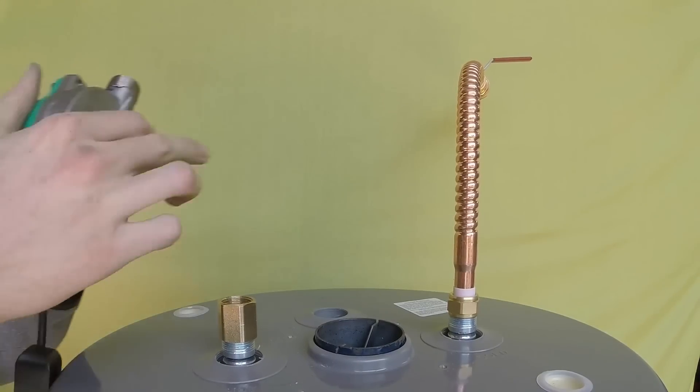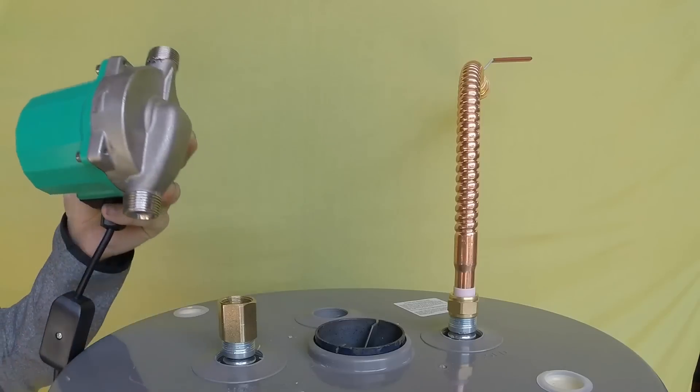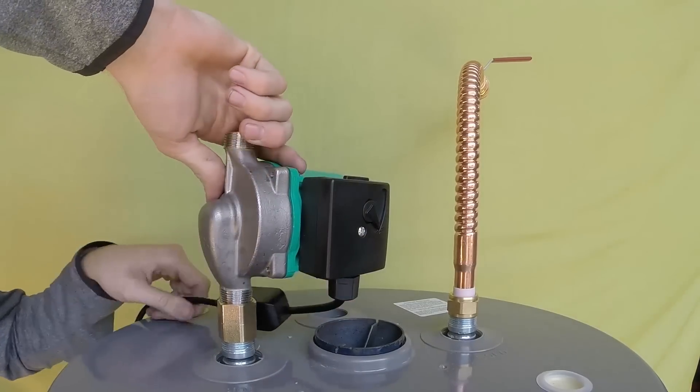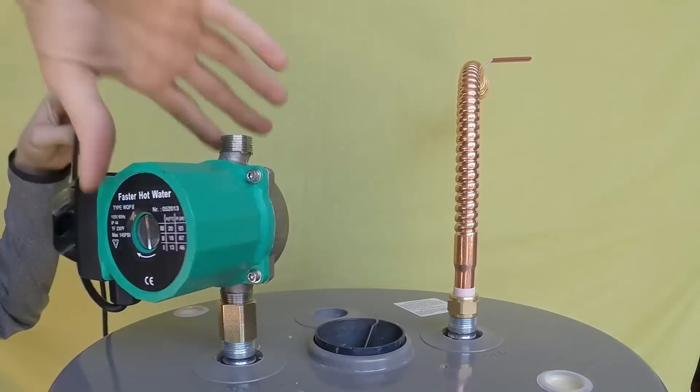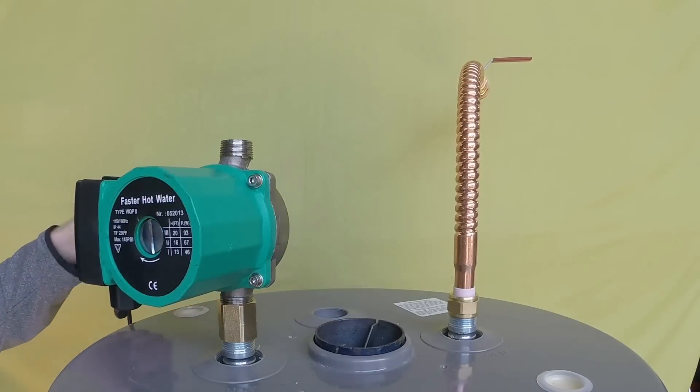Use Teflon and or pipe dope on the upstream side of the pump. Make sure the arrow on the silver part of the pump is pointing up in the direction of water flow. Screw the pump into the three quarter inch coupling until snug. Make sure all parts of the pump are clear of the vent.